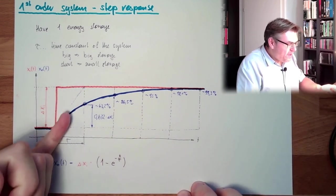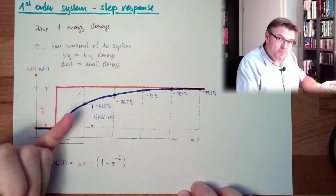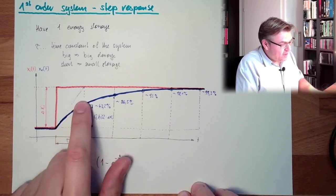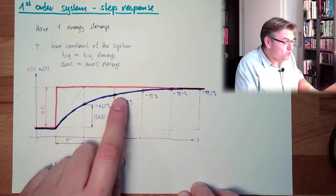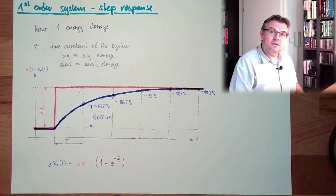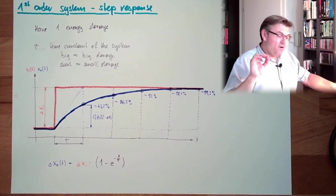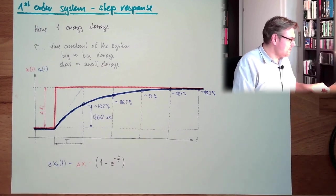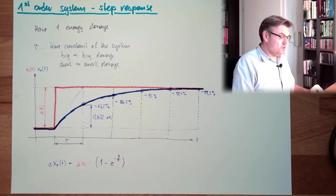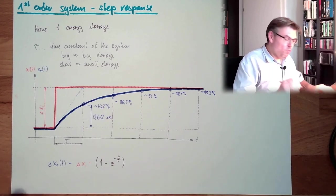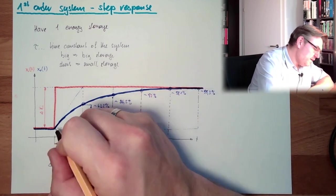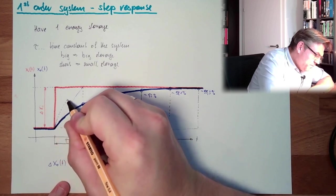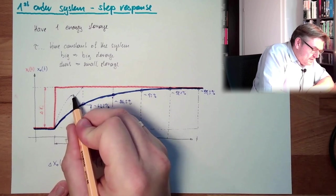We will start with a steepness in the beginning, which is determined by the time constant. And then we will close, and after 5 times the time constant, we are there. If we have a system with smaller storage capabilities, then it would look exactly the same. But we would go up faster simply.